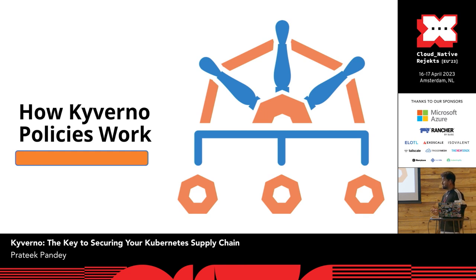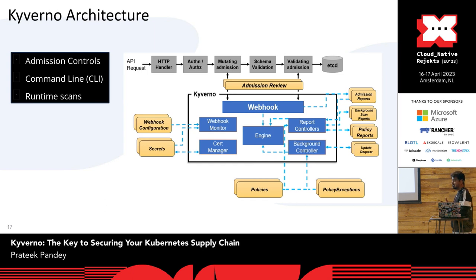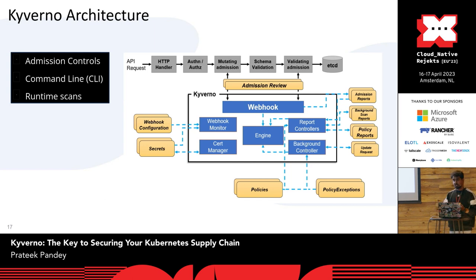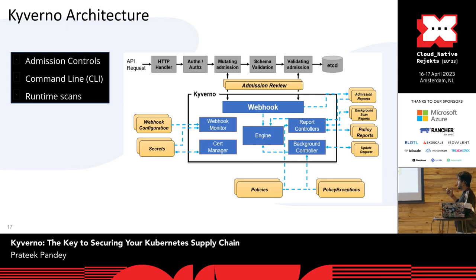Next, how Kyverno policy works — this is the architecture of Kyverno. Kyverno is an admission controller. Kubernetes makes it easy to write admission controllers and extend the Kubernetes APIs. There is a feature called admission webhooks, and Kyverno uses that feature to validate and mutate resources — all requests come in and are handled through mutate and validate API endpoints.